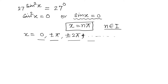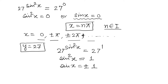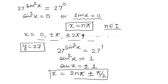Now for the second case, y = 27: since 27^(sin²x) = 27 = 27^1, comparing exponents gives sin²x = 1, so sin x = ±1. The general solution for this equation is x = 2nπ ± π/2, where n belongs to the integers.